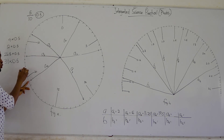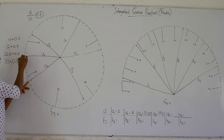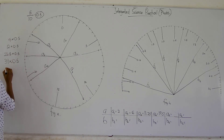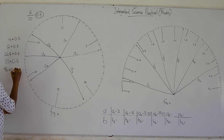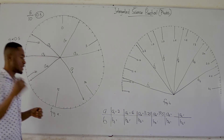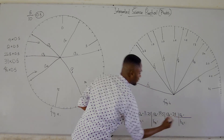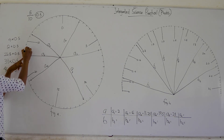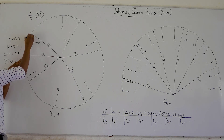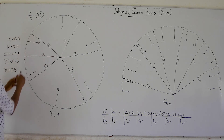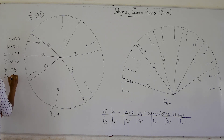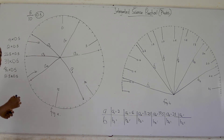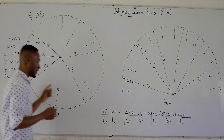Continuing from 39 for a5: 39, 40, 41, 42, 43, 44, 45, 46. A5 is the 46th graduation. 46 times 0.5 gives us 23. Then for a6, continuing from 46: 47, 48, 49, 50, 51, and a half — so 51.5. Multiply 51.5 by 0.5 and we get 25.75. So a6 equals 25.75.